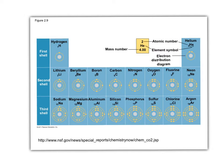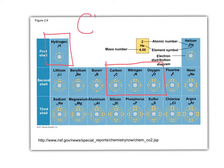When we talk about biology and biological systems, there are four elements that are most important: carbon, nitrogen, oxygen, and hydrogen. I remember it as CHON—carbon, hydrogen, oxygen, nitrogen. All these elements are going to covalently bond.